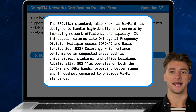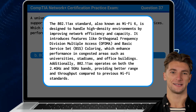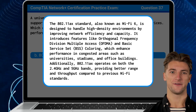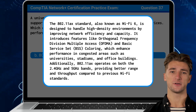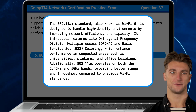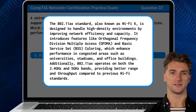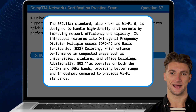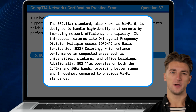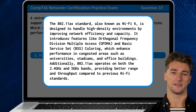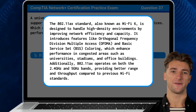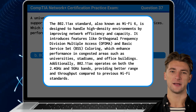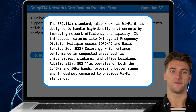The 802.11ax standard, also known as Wi-Fi 6, is designed to handle high-density environments by improving network efficiency and capacity. It introduces features like Orthogonal Frequency Division Multiple Access and Basic Service Set coloring, which enhance performance in congested areas such as universities, stadiums, and office buildings. Additionally, 802.11ax operates on both the 2.4 GHz and 5 GHz bands, providing better range and throughput compared to previous Wi-Fi standards.